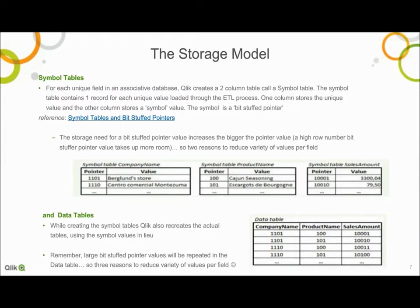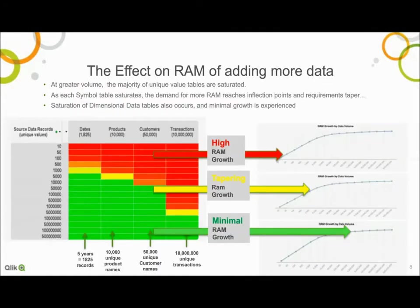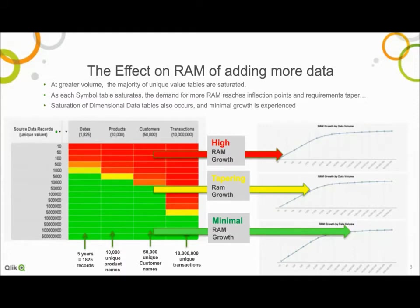The storage model is instrumental in understanding Qlik's ability to scale and why best practices are best practices. In the next slide, we will apply the pure science of the storage model to the effect of actually loading data. This application loads five years of information and has a date field that stores a unique day value for every day in the past five years — five years times 365 days equals 1,825 unique day values. So when Qlik needs to load five years of information, it will often do so by loading a maximum of just 1,825 rows of unique day data values stored in the symbol table.